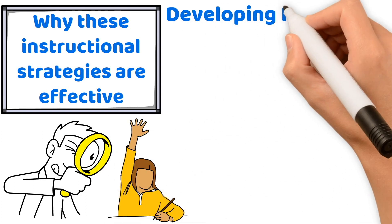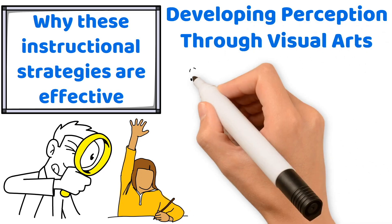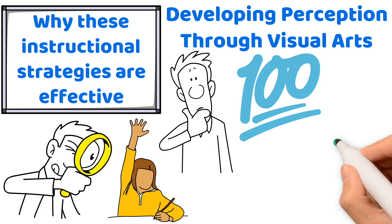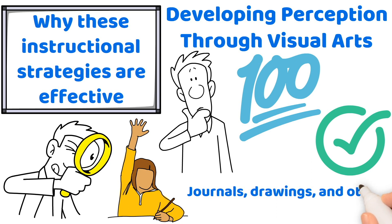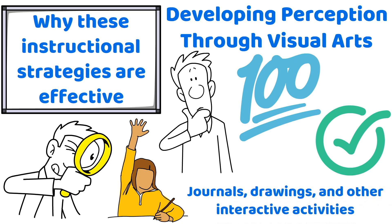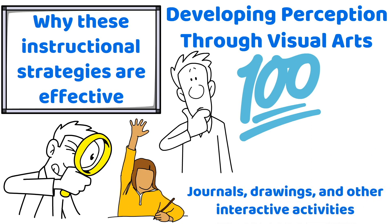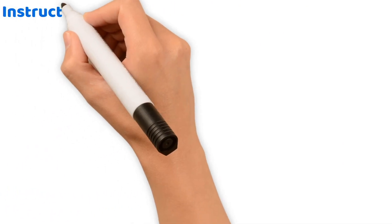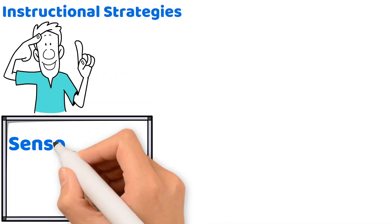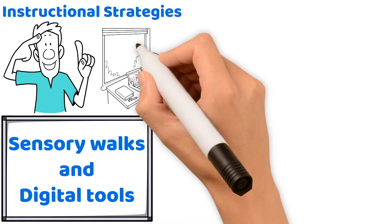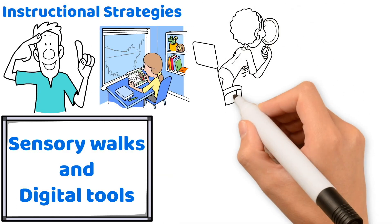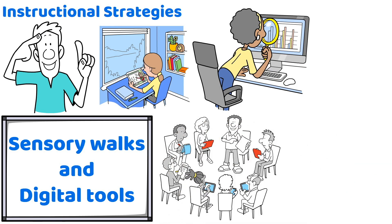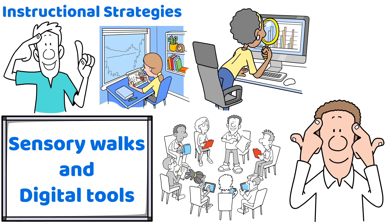Developing perception through visual arts: if the exam asks you to identify the most effective approach to enhance students' observational skills, look for answer options that use student journals, drawings, and other interactive activities. Be ready to select answers that use discussions on artworks from diverse cultures to broaden students' interpretive skills. Remember that the use of sensory walks and digital tools that compare different environmental settings spark young learners' creativity. Look for options that emphasize reflective critique sessions where students discuss their environmental art projects, as this promotes deeper understanding and critical thinking.